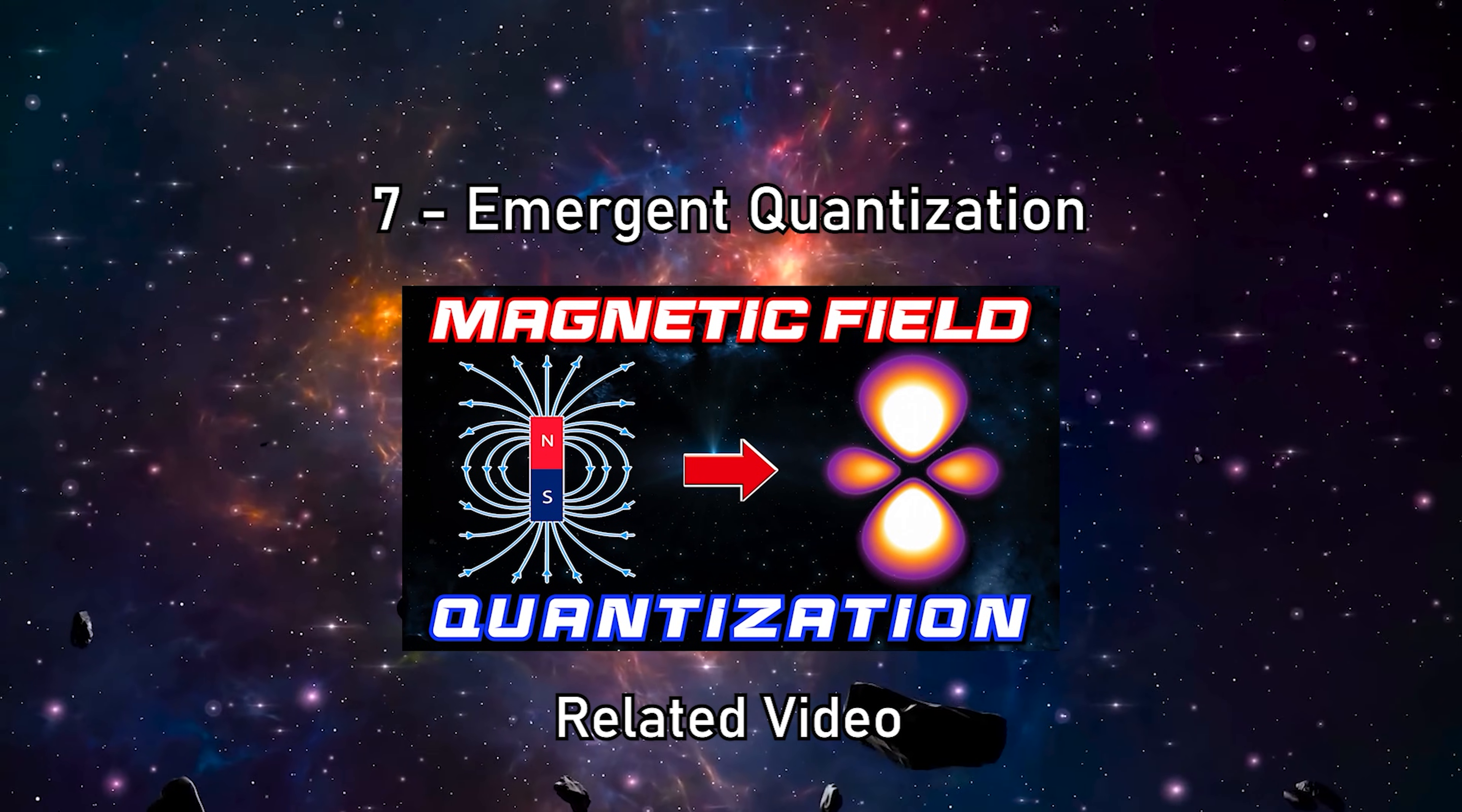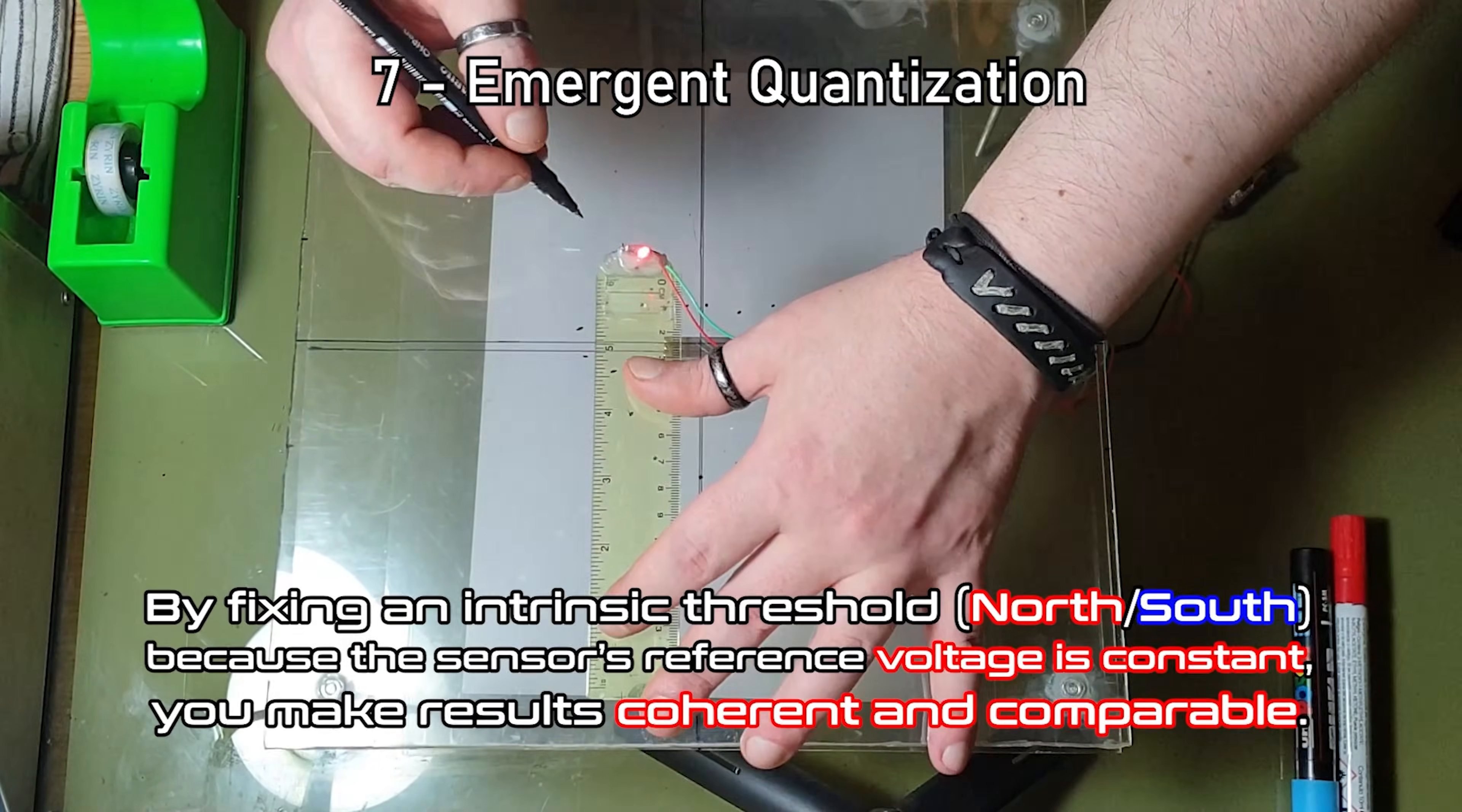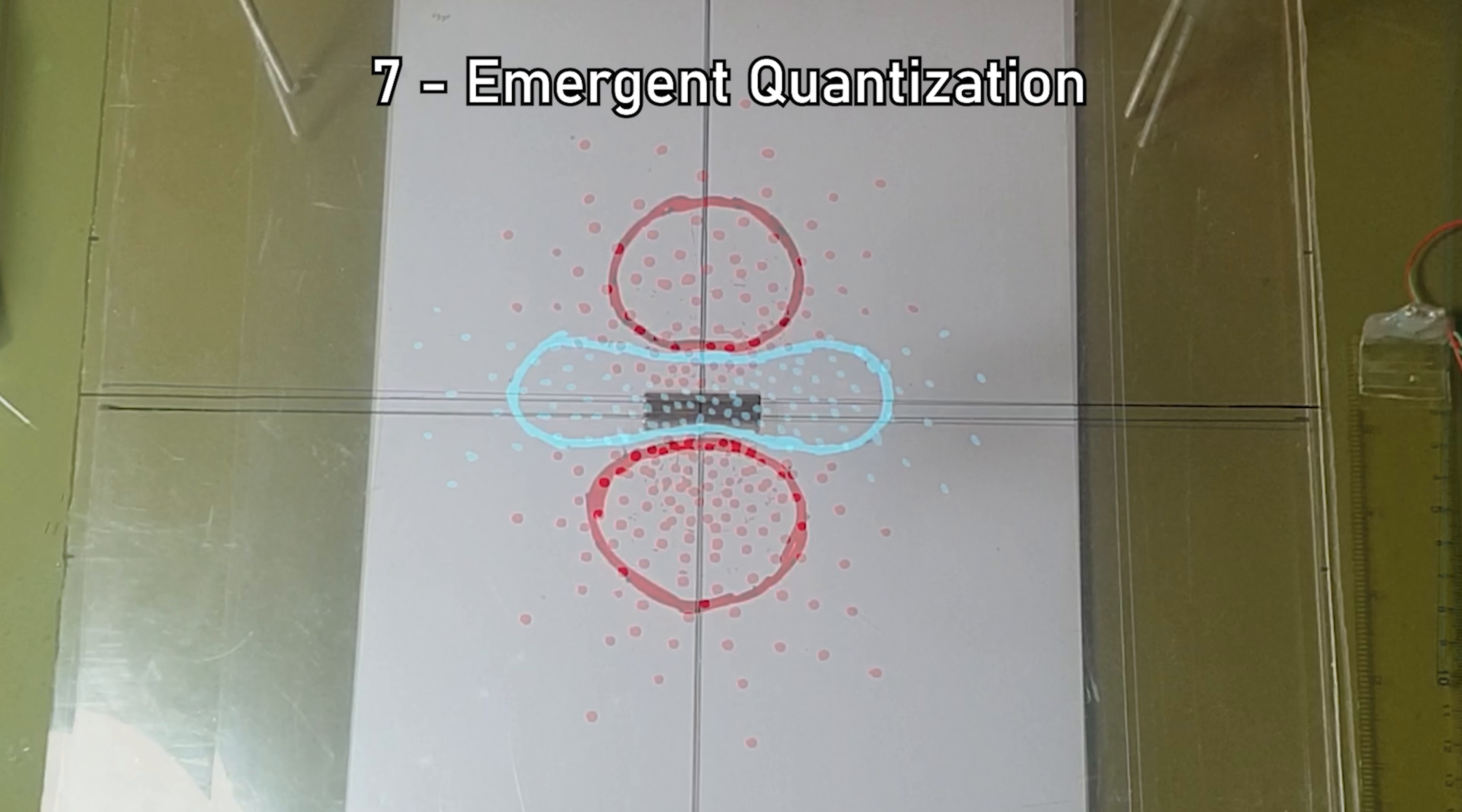7. Emergent Quantization. Through this measurement method, the magnetic field can be interpreted as quantized. Not because we declare it to be so, but because the observable configurations are not continuous, they are selected. The results are precisely those geometries calculated from the solutions of the Schrodinger equation.